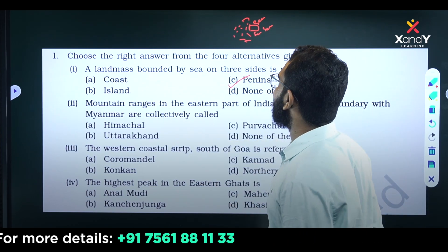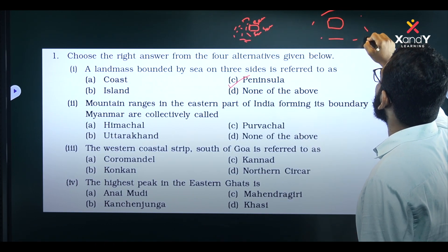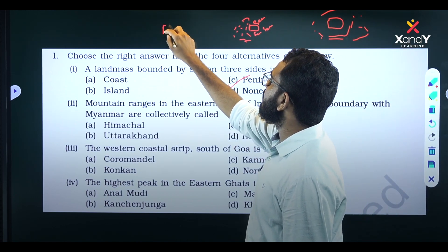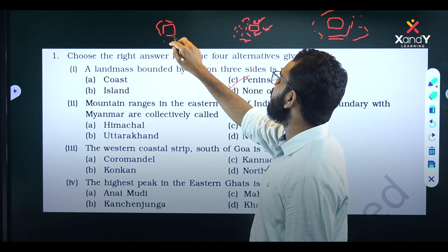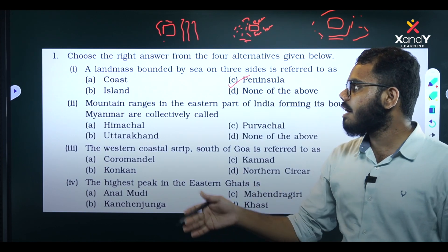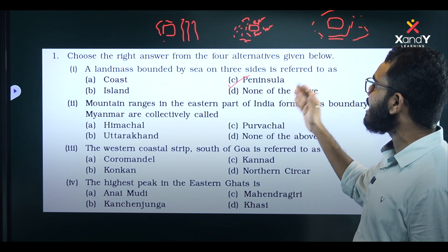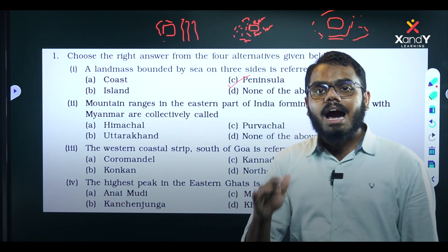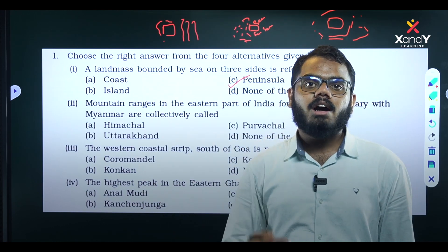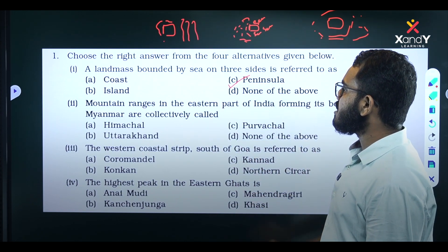There is confusion about the island. An island is surrounded by sea on all sides. The coast is along the sea. The peninsula is surrounded by sea on three sides. Now the answer is a peninsula — Option C is correct.